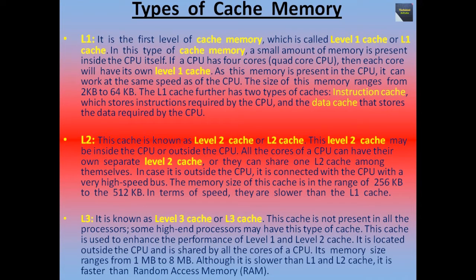Now we talk about types of cache memory. There are three types of cache memories: L1, L2, and L3. L1 is the first level of cache memory, also called level 1 cache. In this type, a small amount of memory is present inside the CPU itself. If a CPU has 4 cores — a quad-core CPU — then each core will have its own level 1 cache.